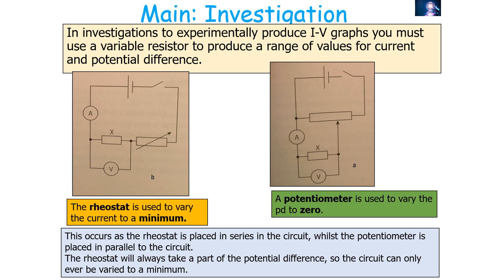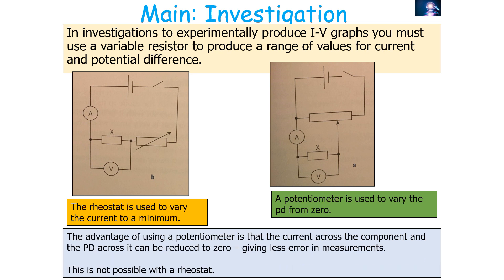The advantage of using a potentiometer in an electrical circuit is that the current across the component and the potential difference across the component can be reduced to zero because it is in parallel with the output. This gives a smaller error in any measurements taken, which is not possible with the rheostat.